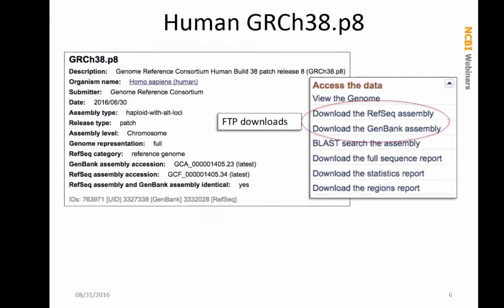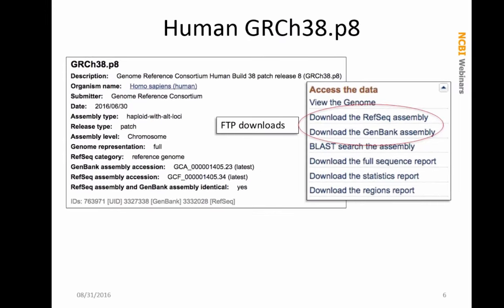If we look at a page — this is the one for the human assembly — the assembly name here is GRCh38 patch 8. You can download either the RefSeq version or the submitted GenBank version of the assembly by following these links. I am not going to go over the full contents of the assembly pages in this webinar, because we are mainly talking about the FTP site and how to get data out of there.